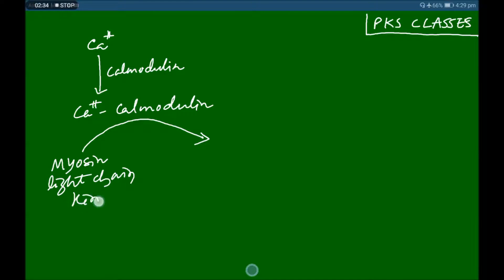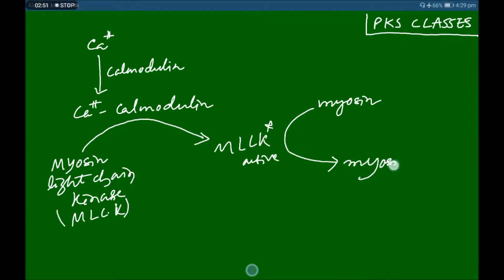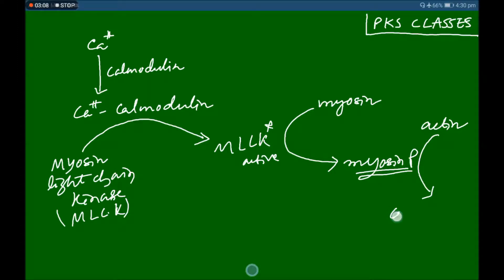MLCK is activated and it phosphorylates myosin to form myosin phosphate. The two contractile proteins, actin and myosin, then interact, causing contraction of the vascular smooth muscle, leading to vasoconstriction.